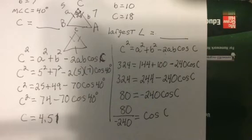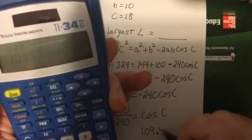80 divided by 240, and it messed up, let's try this again. Oops, I messed up again, one more try and if I don't get it I'm going home. Okay, cosine inverse of 80 divided by negative 240, close parentheses, equals, and I get 109.47. Sorry about that kids, it was causing me problems.